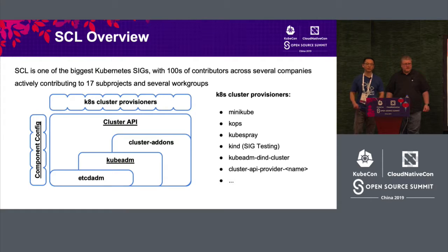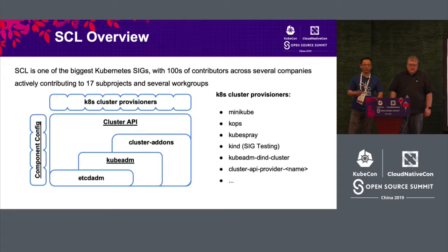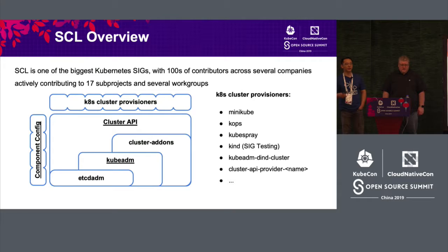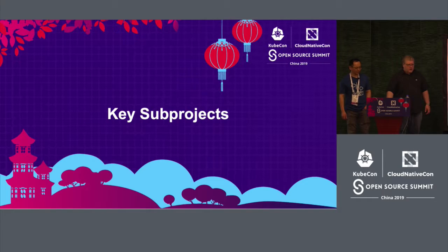MiniKube is the first cluster tool many people use when getting started with Kubernetes. It bootstraps virtual machines on your laptop or servers and installs all packages to give you a standalone Kubernetes cluster. Note that MiniKube doesn't work well in China since it pulls images from gcr.io. KubeSpray is an Ansible-based playbook set that bootstraps a full cluster, and you can reuse all the roles and playbooks in KubeSpray to customize your own setup. We won't have time to cover all 17 projects, but let's talk about a few key sub-projects.